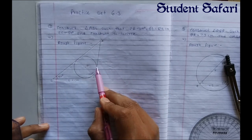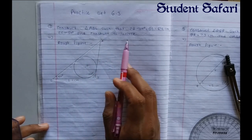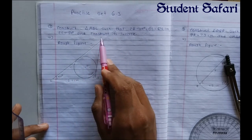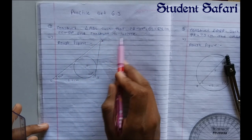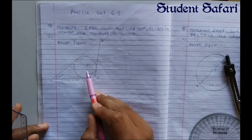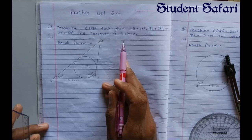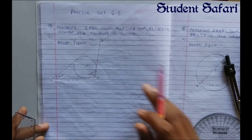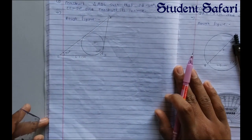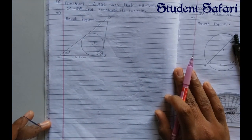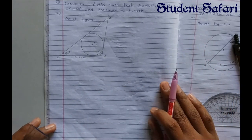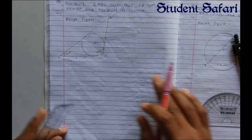Remember: to draw the rough figure, no need to take any measurements — just include the triangle and the given data. The incircle means the inner circle, and the circumcircle means the outer circle. We have to draw the incircle, so first we will draw the triangle as we did in previous lectures.